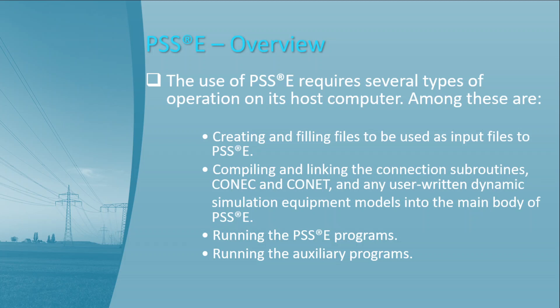In the PSSE overview section, the use of PSSE requires several types of operations on its host computer. These include creating and filling files to be used as input files to PSSE — meaning the initial data is submitted into PSSE as input files — compiling and linking connection subroutines like CONIC and CONET, as well as any user-written dynamic simulation equipment models into the main body of PSSE, and then running the PSSE programs and auxiliary programs.